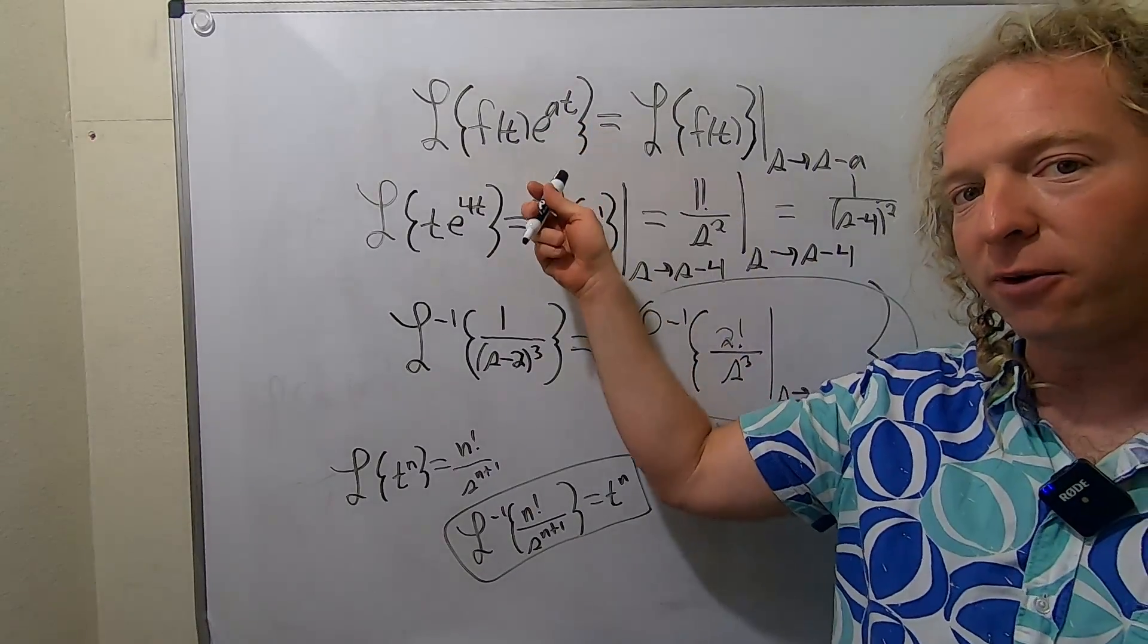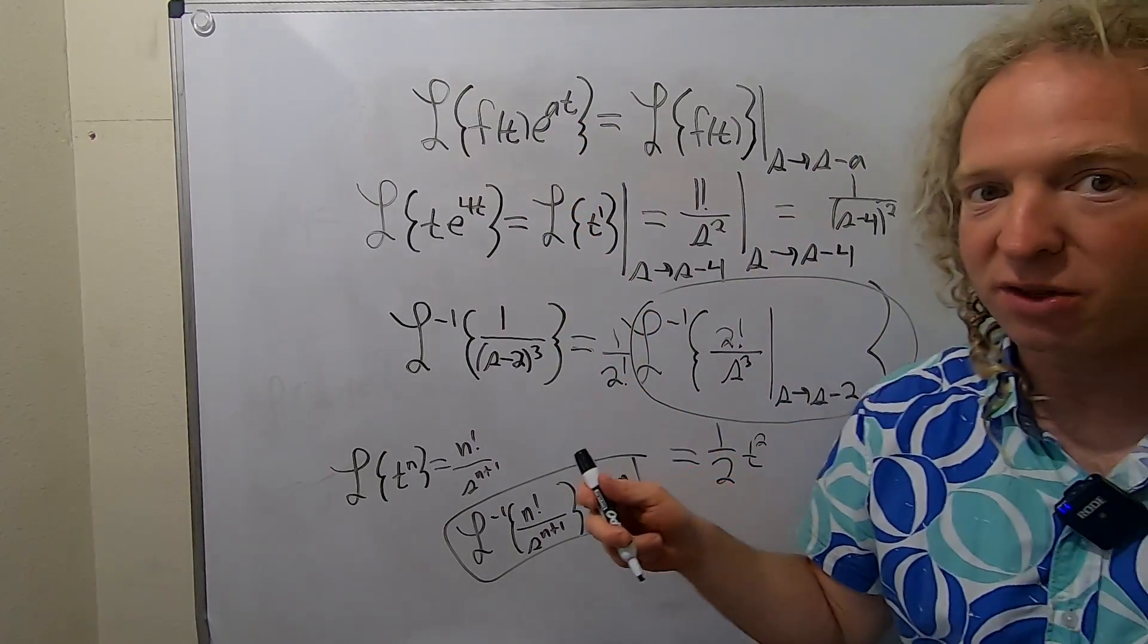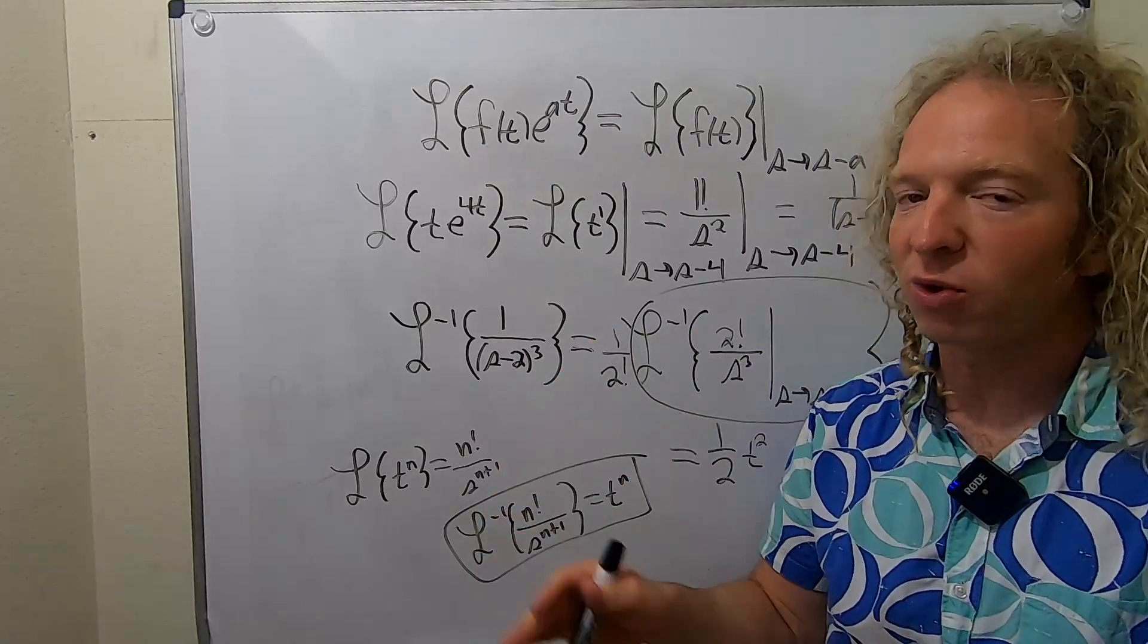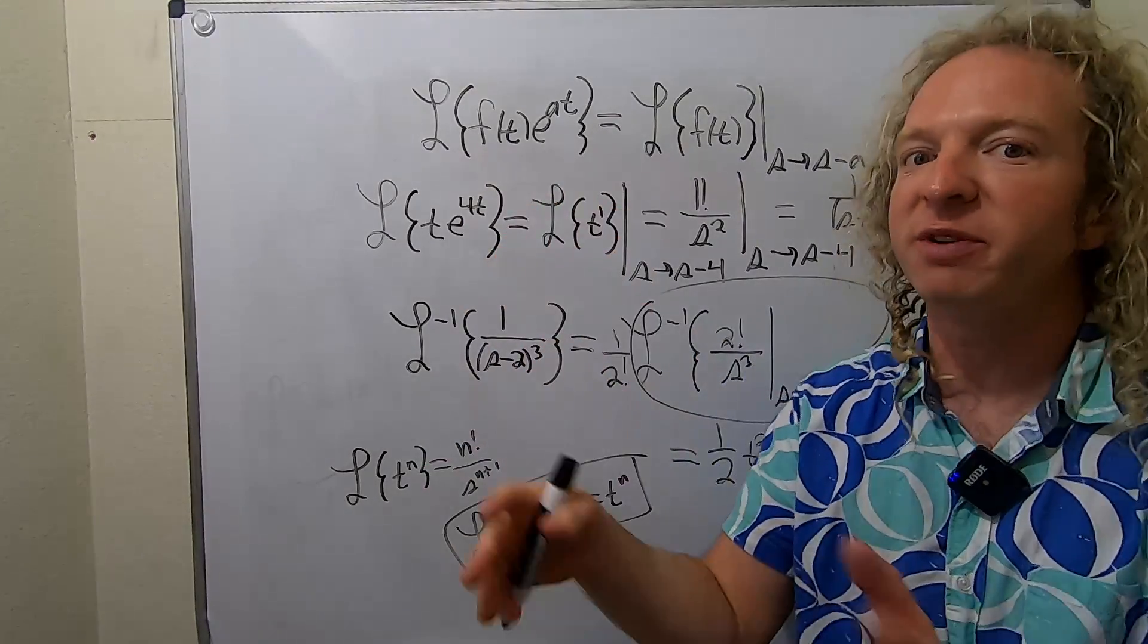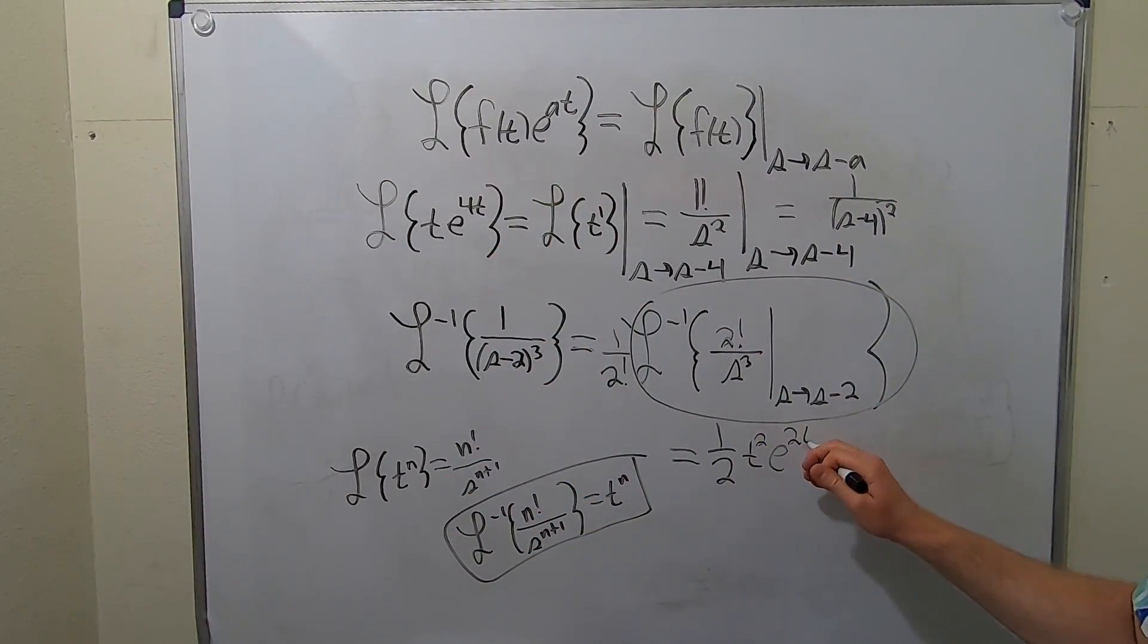And if you think about what happened before with the first translation theorem, the e became a shift. Well, it works backwards too. The shift becomes an e. This will be e to the 2t. And that would be the final answer.